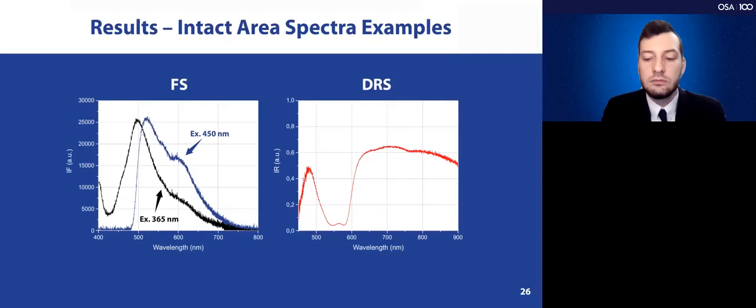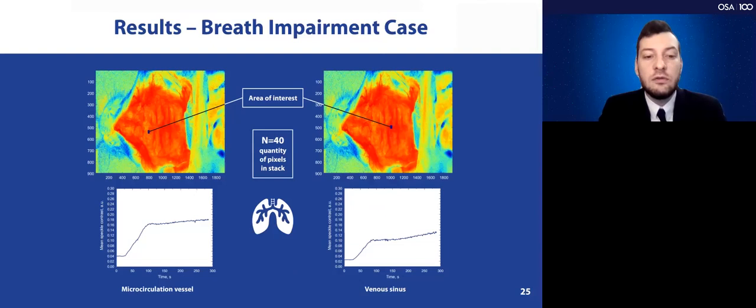We've chosen two areas of interest to see the mean speckle contrast dynamics in time. We've chosen the vessels of microcirculation on the left and the large venous sinus on the right. As we can see here, the mean speckle contrast in the vessels of microcirculation grows within first two minutes approximately. Meanwhile, this growth in the large venous sinuses is less expressed. The mean speckle contrast growth does not go more than 0.12. Meanwhile, for the microcirculation vessels, the growth is about 0.18.